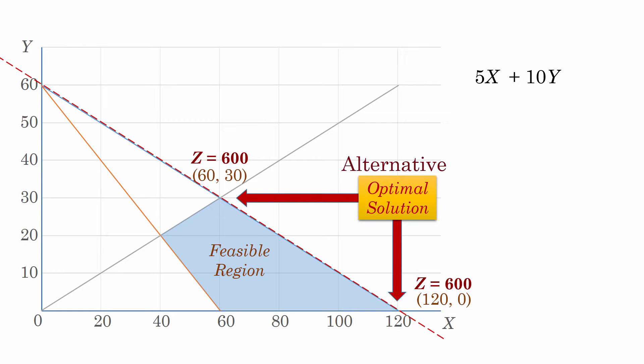This essentially happens when a constraint touching an optimal solution point, that is, a binding constraint, is parallel to the objective function line. Note that the left side of the first constraint is 1x plus 2y. And when you multiply that by 5, you obtain the objective function.